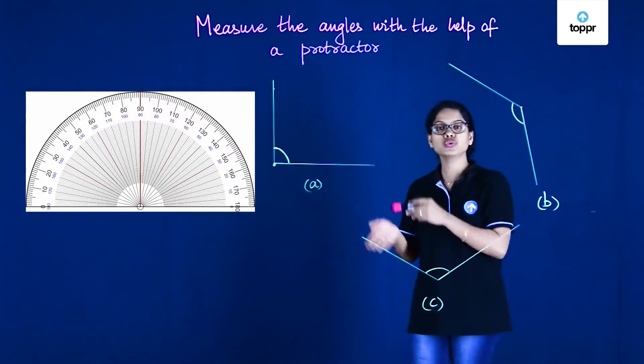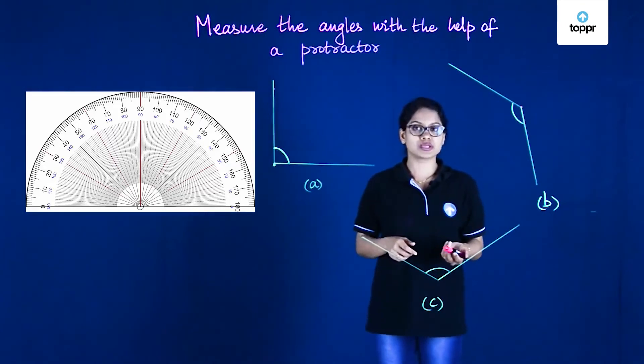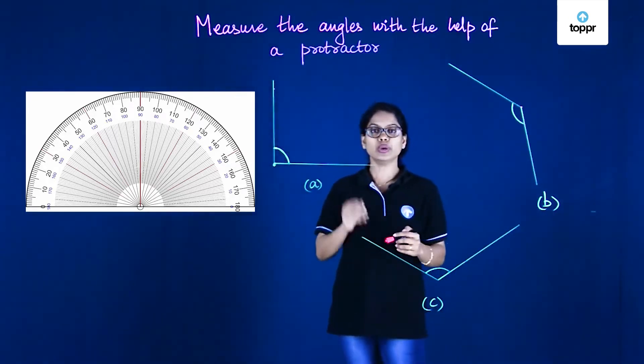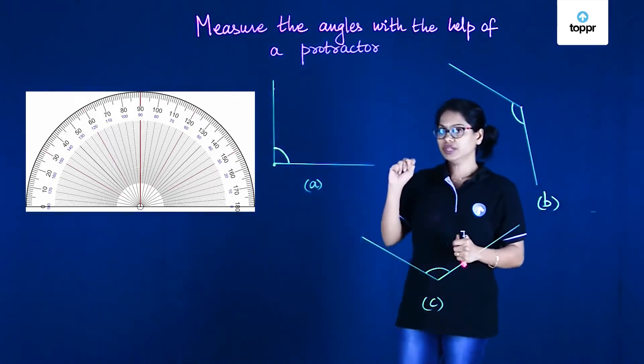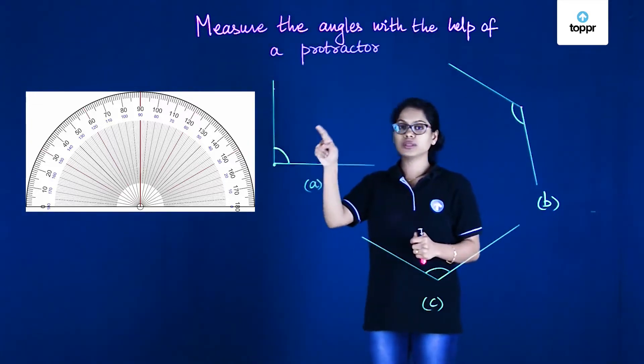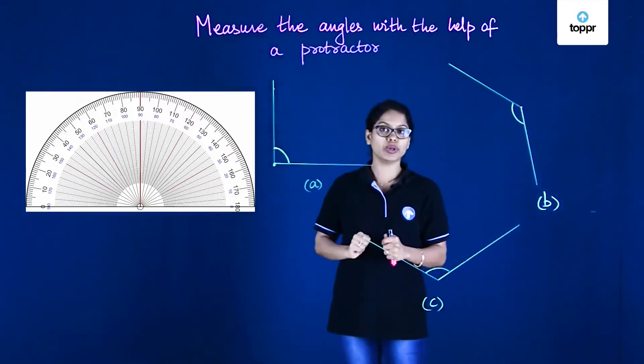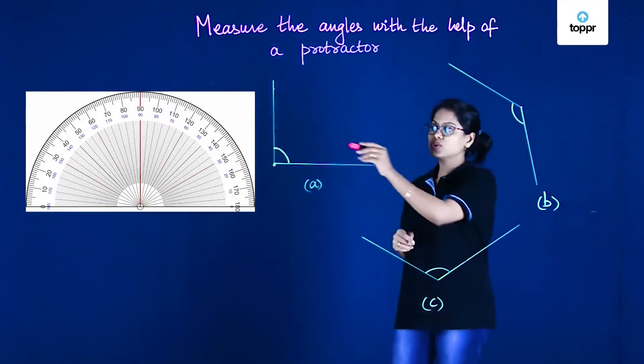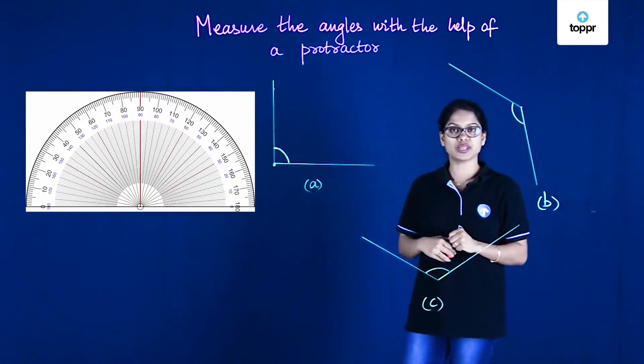Now we're going to use this to measure various angles. All we need to do is ensure two things: that the vertex of the angle coincides with the center point, and the base of the angle coincides with this baseline that we have just seen.